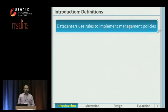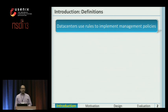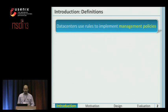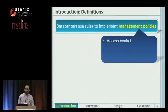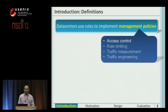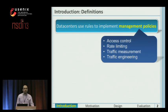Managing data center networks involves different kinds of policies, and these policies are applied using rules. For example, to limit the communication between two tenants, we use an access control policy. Rate limiting, traffic measurement, and traffic engineering are other examples of a policy.